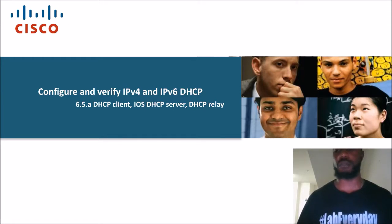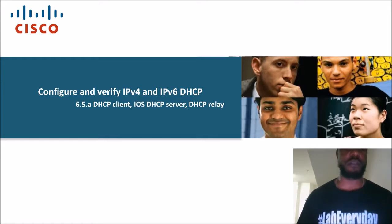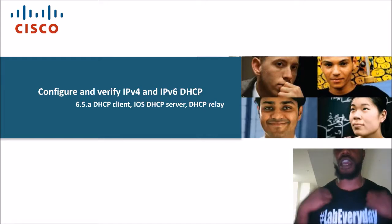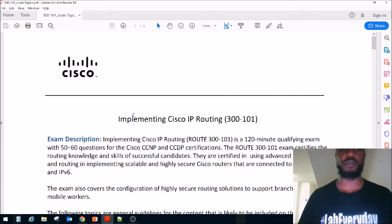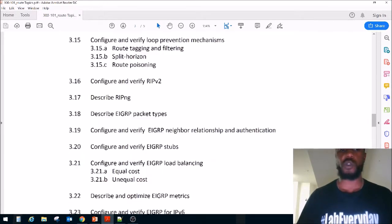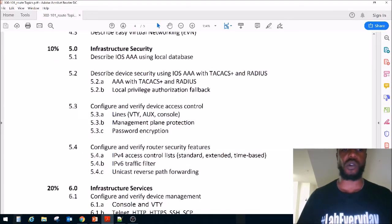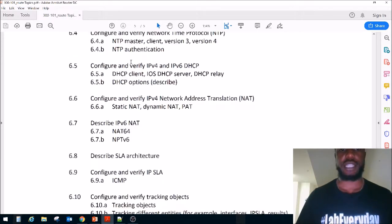This is a topic in the CCNP Route exam, which will be known as the CCNP Enterprise exam in the year 2020. Let's take a look at the exam blueprint. This is implementing Cisco IP Routing, exam code 300-101, and exam code 300-401 in the future. We just wrapped up the section on NTP authentication, and today we're going to do DHCP client, DHCP server, and DHCP relay.